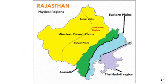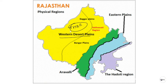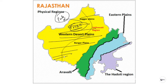The four physical regions are: first, the Western Desert Plain, where we find the Thar Desert. We share the Thar Desert with our neighboring country, Pakistan. More than half of Rajasthan's area is covered with the Western Desert Plain, and the major chunk of the Thar Desert falls within Rajasthan, though we share it with Pakistan as well.